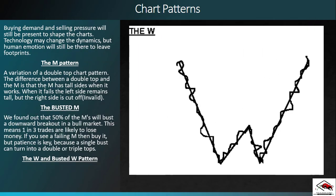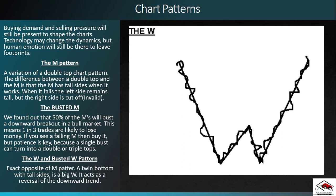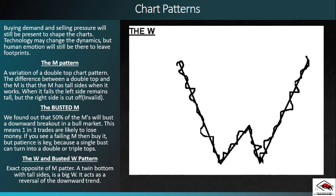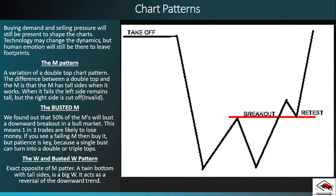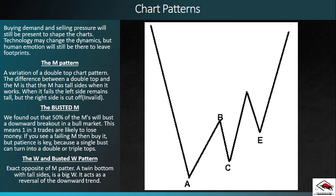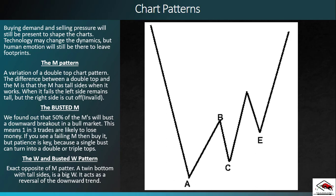Now let's move on to the opposite chart pattern — the W formation. A W, in opposition to the M, has a twin bottom instead of twin tops. It acts as a reversal of a downward trend, where the market has hit rock bottom and is now turning into an uptrend. The takeoff point will be higher, the bottoms sit at the base, and we have a breakout point where we can expect a retest. The breakout happens when price closes above peak B — the peak between the two bottoms A and C.